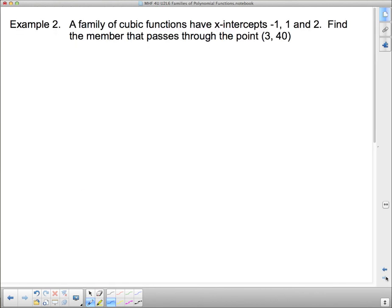Now the next example asks for a specific member. A family of cubic functions have x-intercepts -1, 1, and 2. Find the member that passes through the point (3, 40). Now this is very much the same as one that we've done in previous units. We're just calling it a polynomial family member now.